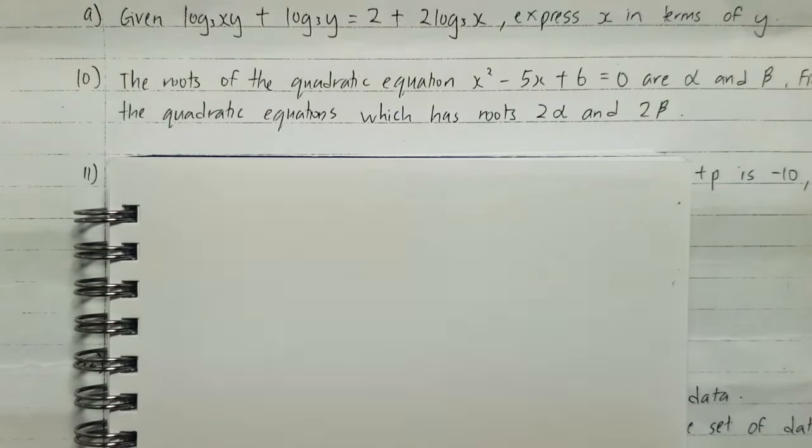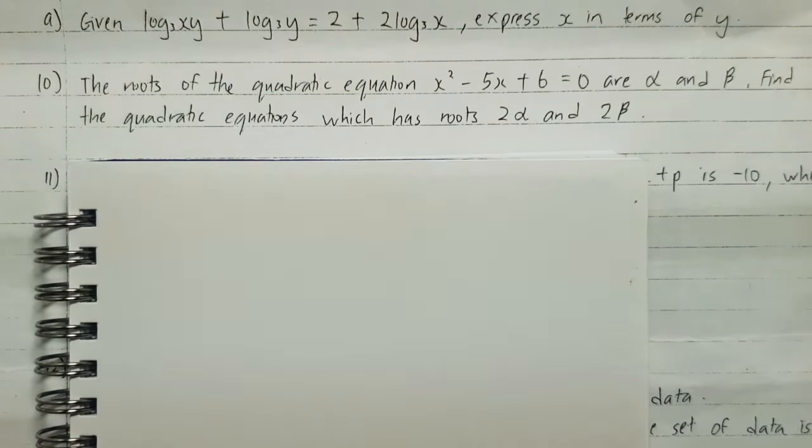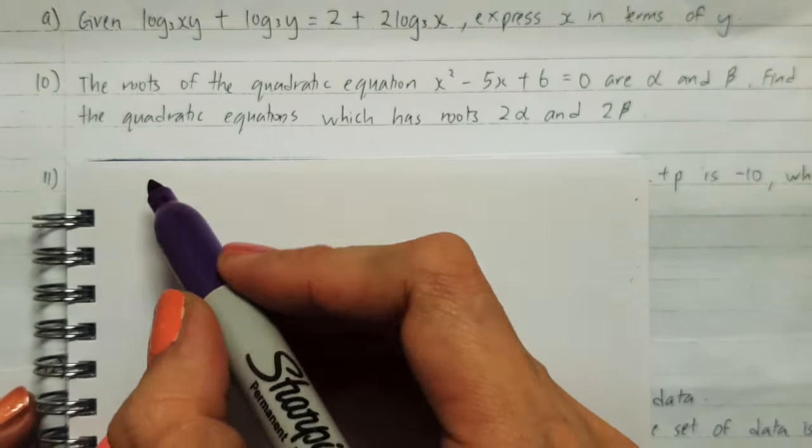For question number 10, we have the roots of the quadratic equation alpha and beta. Whenever you see alpha and beta, this question is about sum of roots and product of roots. So look for the keyword.